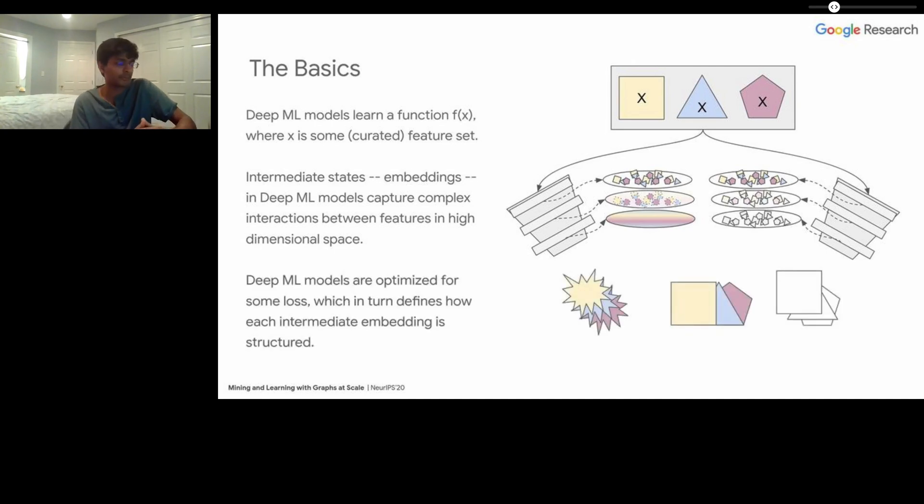These models are then optimized for some sort of loss, which in turn defines how each intermediate embedding is structured. On the left-hand side, we have a loss that's entirely about color. That model's intermediate state will surface information related to the feature's color scheme. On the right-hand side, we have a model primarily focused on shape. That model will have an intermediate state that stores information related to the underlying shape of the intermediate features.